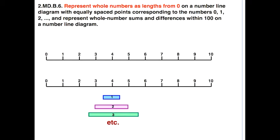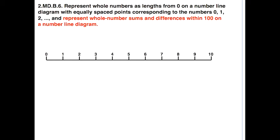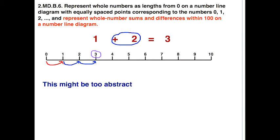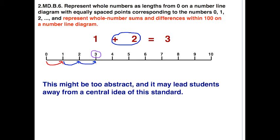In this way, you can address the last part of the standard that deals with sums and differences. Let's look at sums and differences within a hundred on a number line diagram. Let's start simple with one plus two. We have a distance of one initially — we start at zero and go to one, then we're adding two, so we start from one and go two more to the right. We're at three. However, that approach might be too abstract and lead students away from the central idea: whole numbers as lengths from zero.